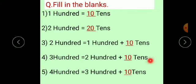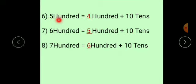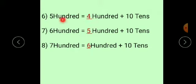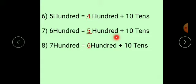This 10 tens is equal to 100 again. The fifth one is: 400 is equal to 300 plus 10 tens. The sixth: 500 is equal to blank 100 plus 10 tens. Here, 10 tens means 100, and since we need 500, we require 400 plus 100. So the blank must be 400. Next: 600 is equal to 500 plus 10 tens.